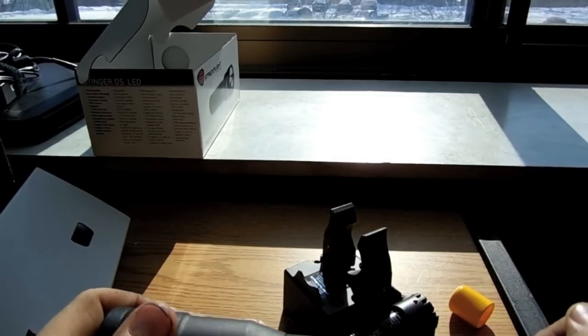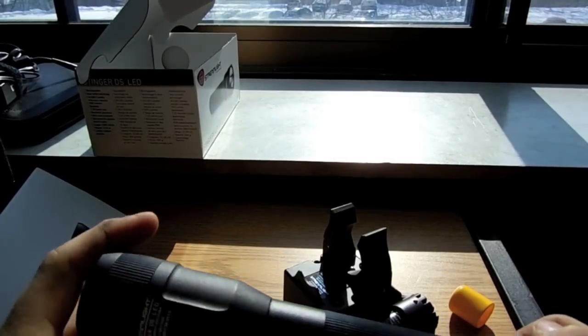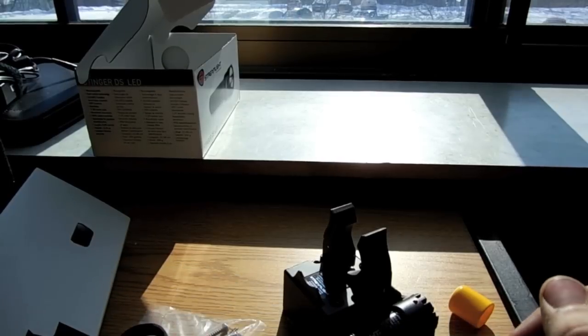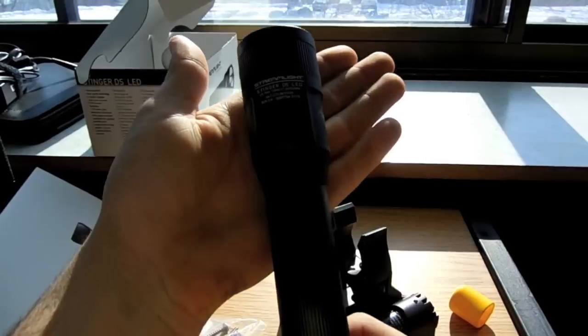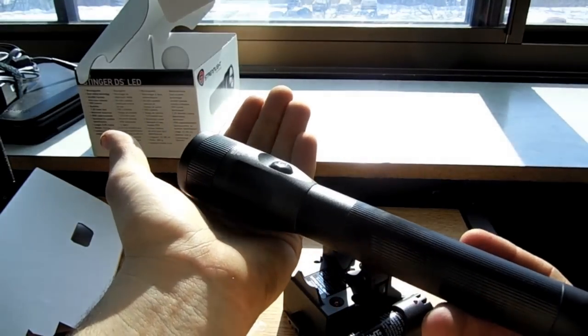Pretty damn bright if you think of it that way. Maglites are about sometimes around 30 to 40 lumens depending on the old incandescent double-A ones. This freaking lighting, I'll probably end up redoing this video because I don't like it too much.